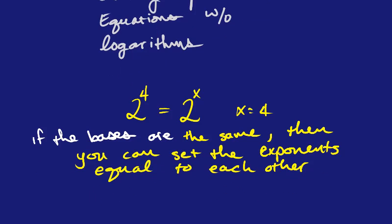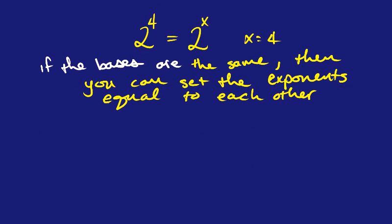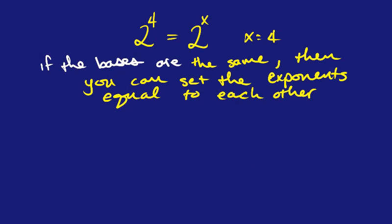So obviously the answer to that equation is x equals 4. However, we're going to look at a little bit more difficult problems, but that's basically the idea right here, is that in an exponential equation, if I can get the bases to be the same, then I'll set the exponents equal to each other, and I will be able to find what x equals.